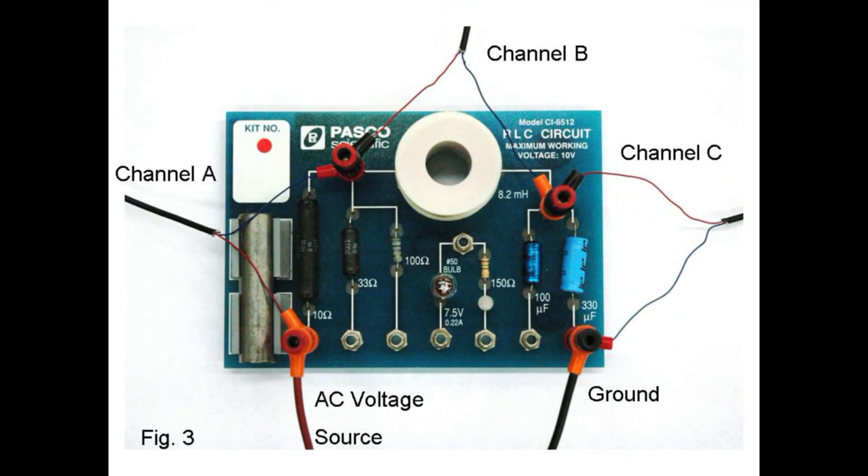Here is the basic circuit setup. The AC voltage source is applied across the base of the circuit. The voltage sensors to each of the three science workshop inputs monitor resistor, inductor, and capacitor voltages. It is important to place the red probe on the high-voltage side of each element in order to keep the phases correct.